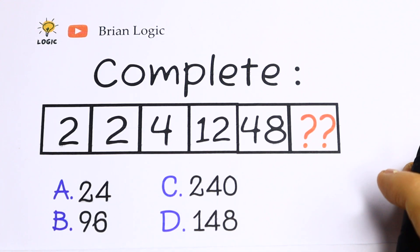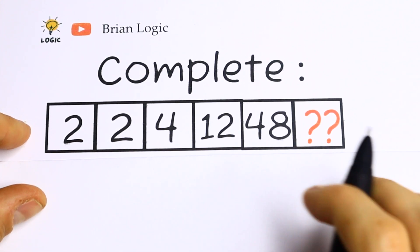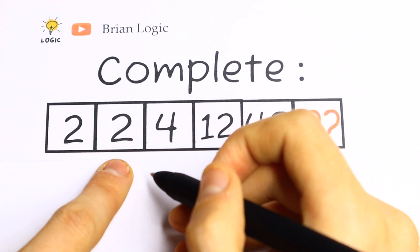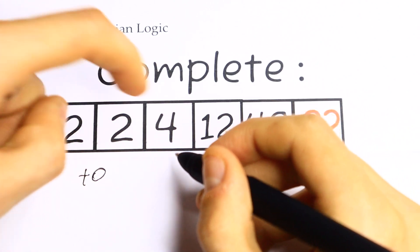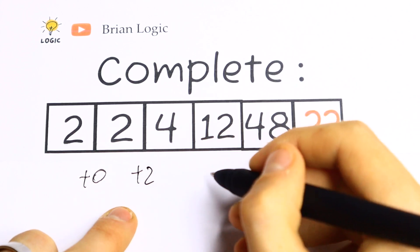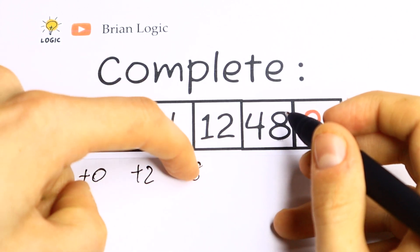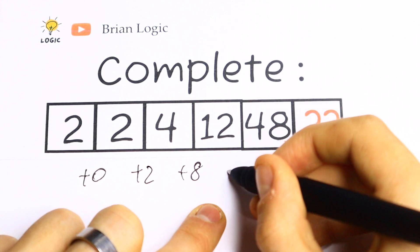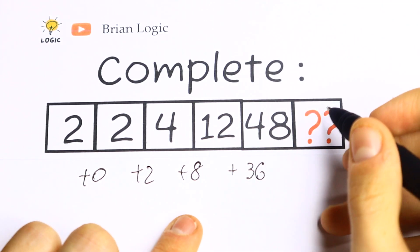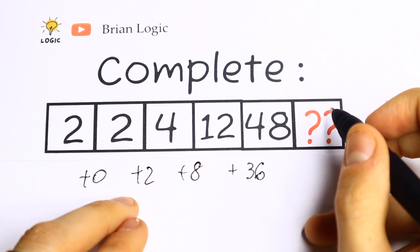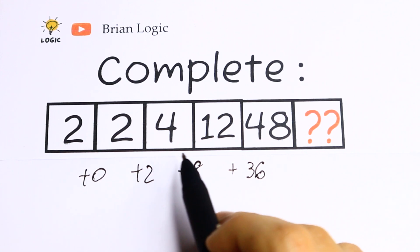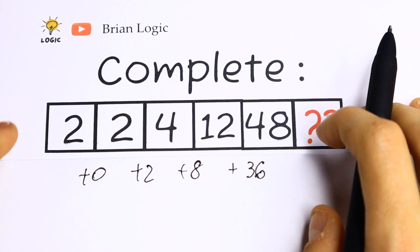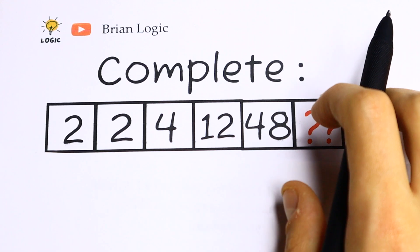Let's try to solve it. We have a lot of numbers, so let's start with addition. Maybe there's a pattern with addition. What do we need to add to this 2 to get this 2? We need to add 0. To get from 2 to 4, we add 2. Here we add 8, since 4 plus 8 equals 12. And here we need to add 36. As you can see, there's no pattern between these numbers. We have 0, 2, 8, 36 - there's no clear pattern.